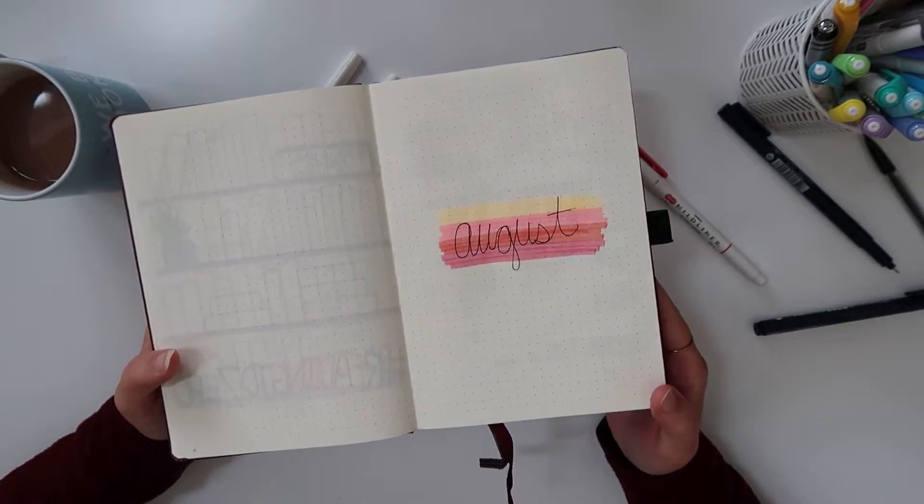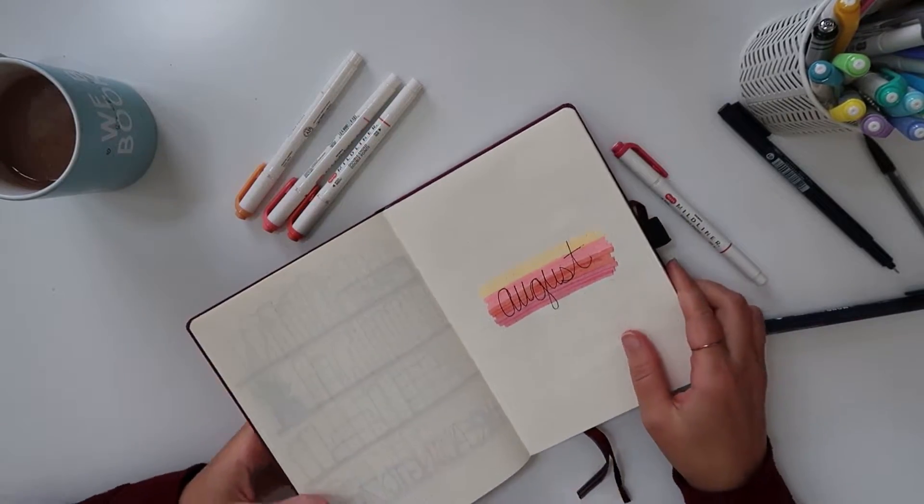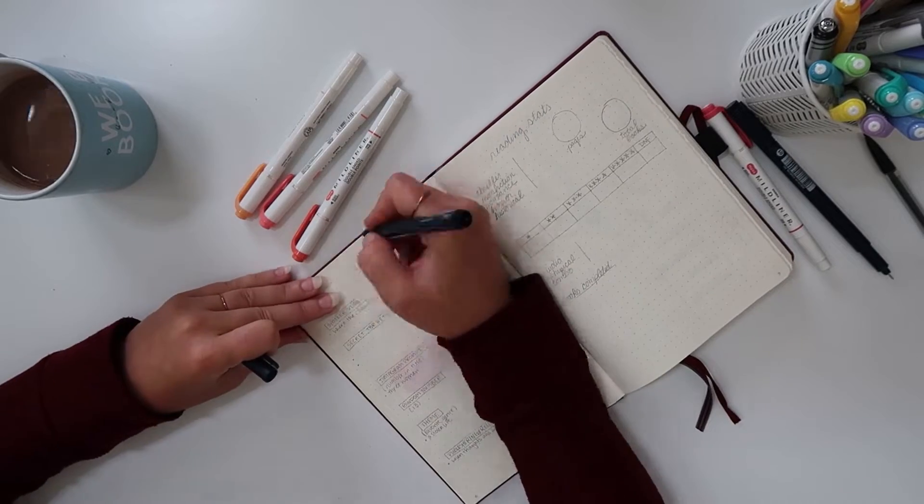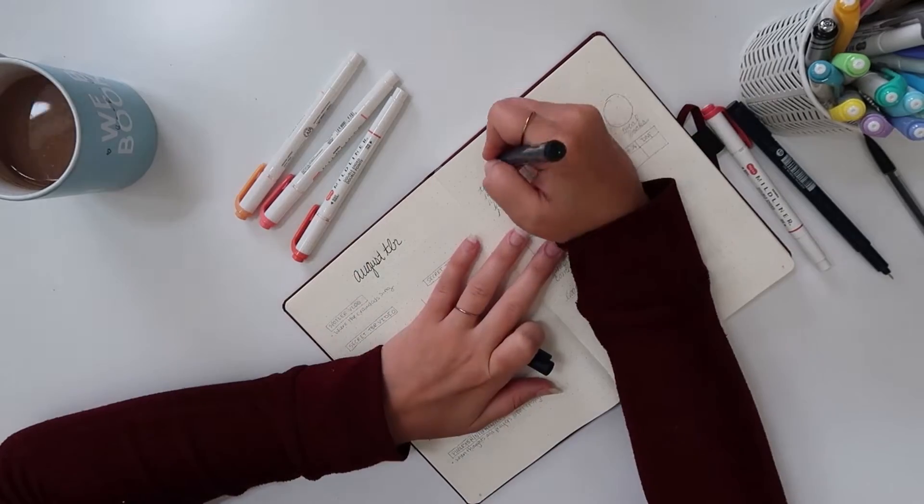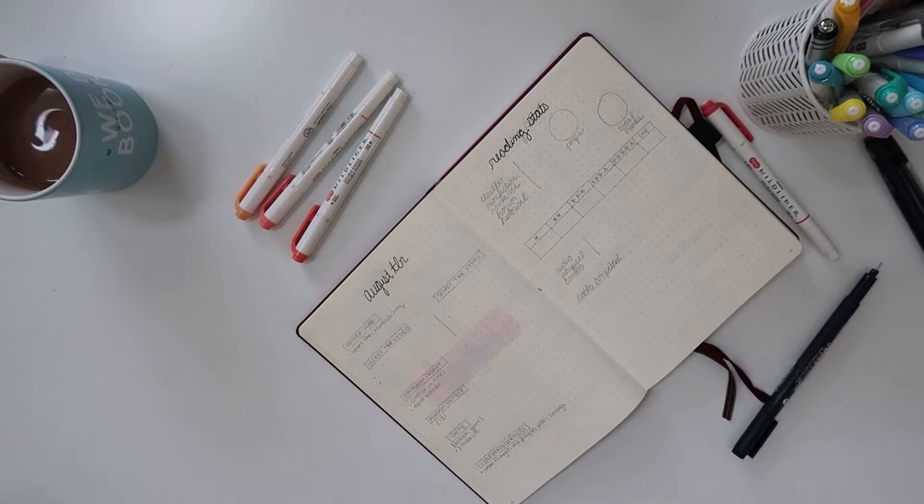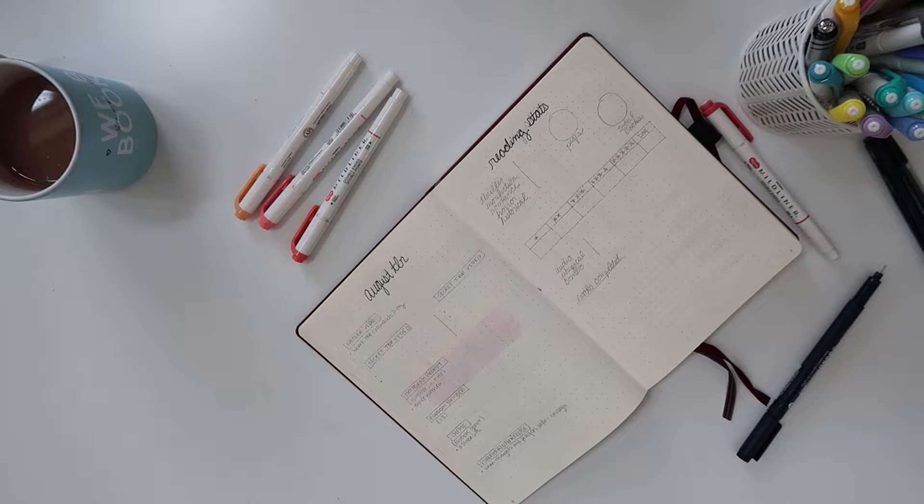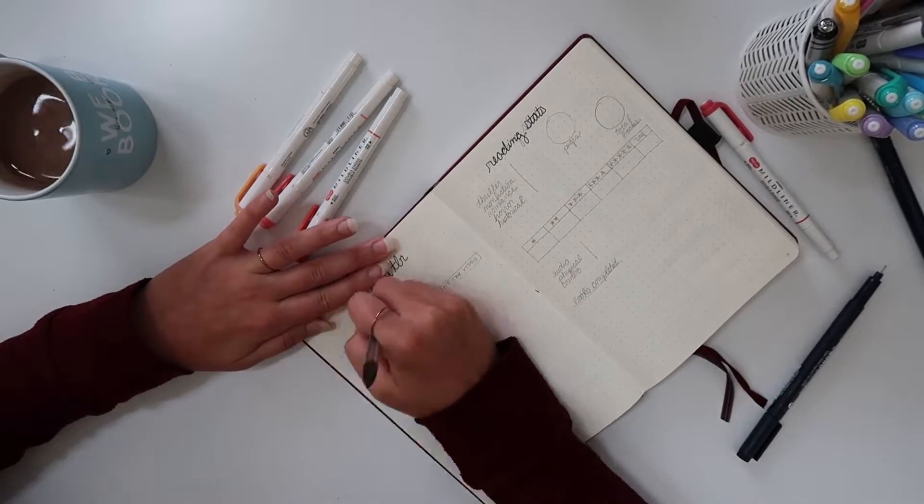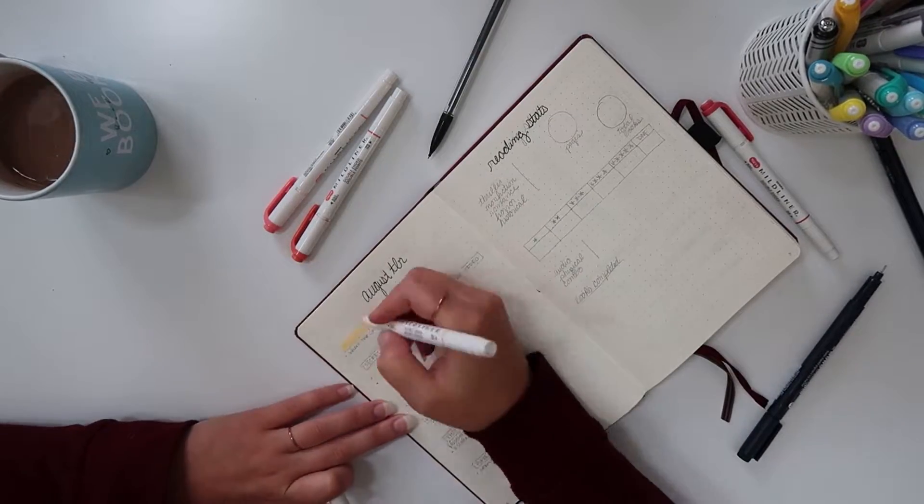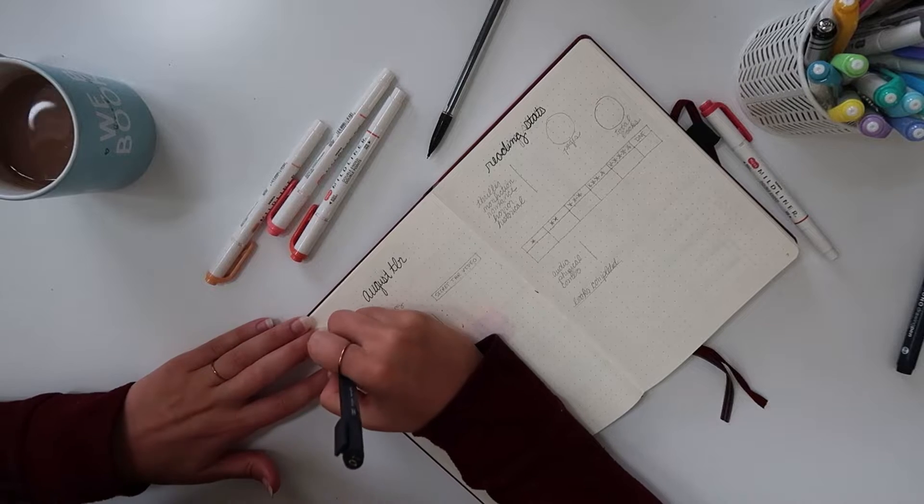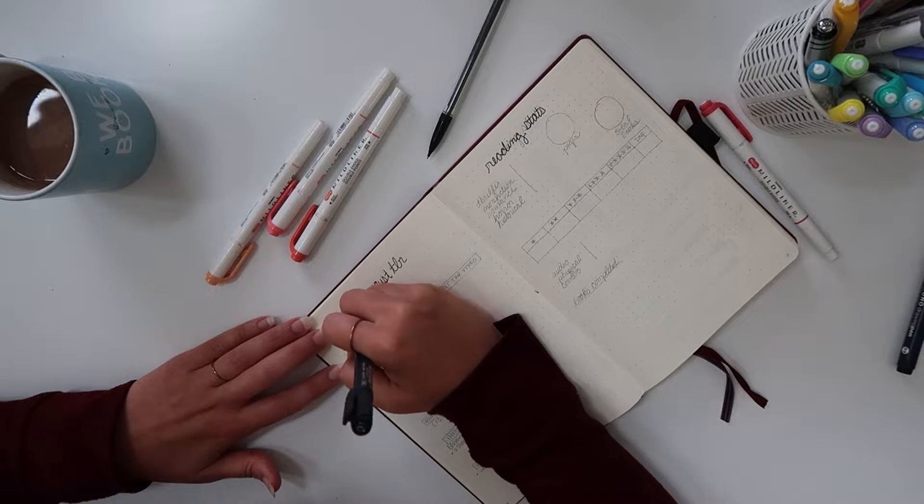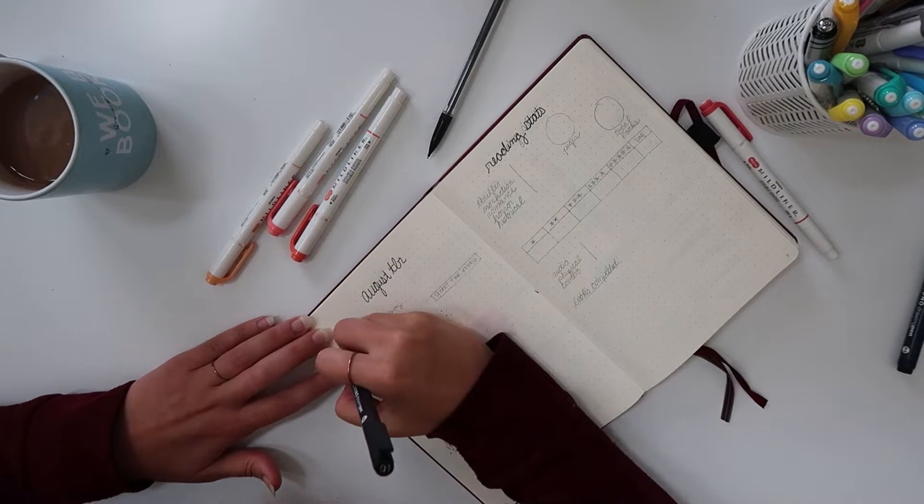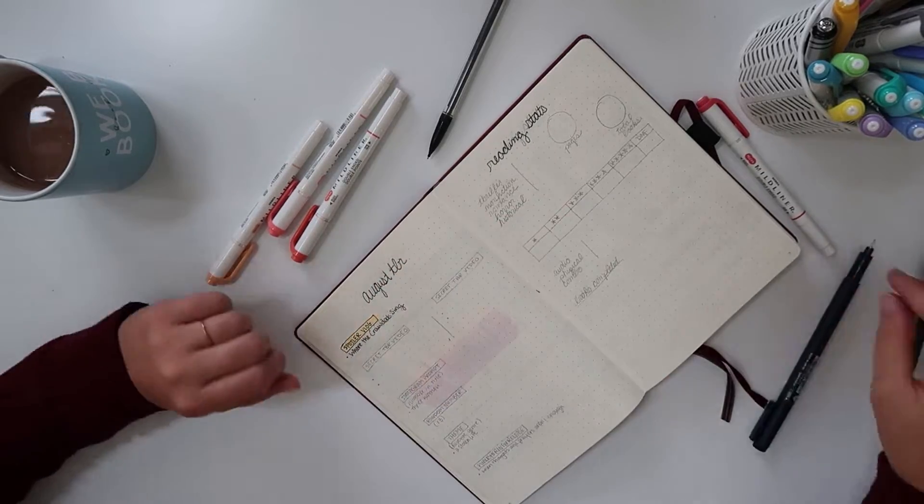Now I'm working on an August TBR spread and a reading stats spread. For my August TBR this is where I kind of figured out exactly what books I was going to read. I am doing a spoiler vlog so I have my one title for that. I'm going to be working on two secret TBRs which I did not write the titles in this video because you guys are probably sneaky and trying to figure those out.